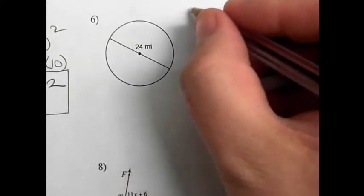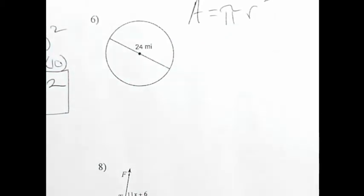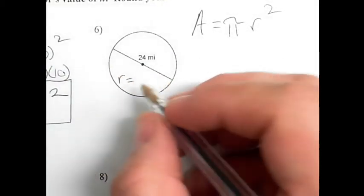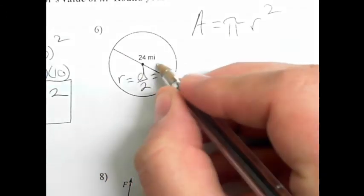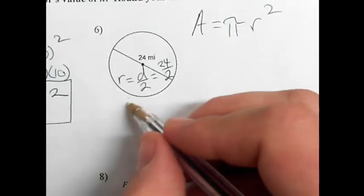Problem number six. The formula is the area is equal to pi times r squared, but we're given the diameter. So you've got to solve for the radius, which is the diameter divided by 2, which is 24 divided by 2. It's 12.